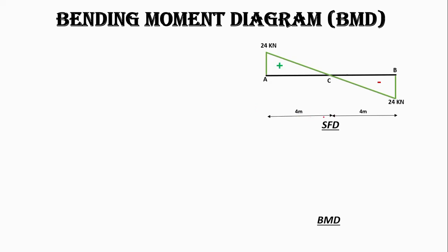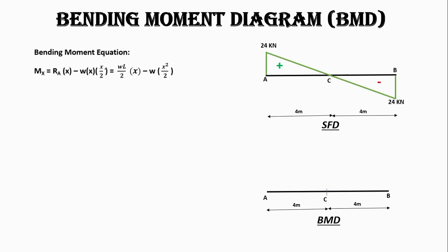Let's draw the bending moment diagram. We will use the bending moment equation rather than the area method. For beam AB with center C, the bending moment equation is M(x) equals Ra times x minus w times x times (x/2), giving M(x) equals (wL/2)x minus wx²/2. At point A, x equals 0, so the moment equals 0 kilonewton-meters.